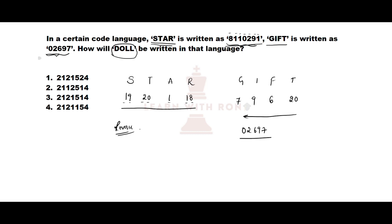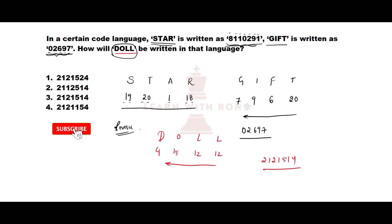Now let us find the coded value for DOLL. D=4, O=15, L=12, L=12. Writing in reverse order: 2,1,2,1,5,1,4. That gives 2,1,2,1,5,1,4 which is option number 3.